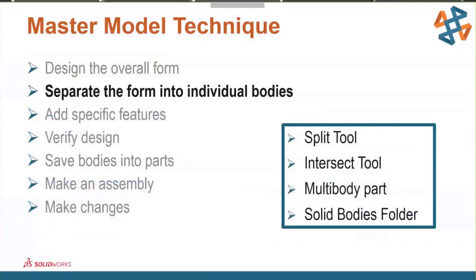Our next step is separating the form into individual bodies. We're going to use the Split tool and the Intersect tool. The Split and Intersect tools are great ways to add bodies without having to add or remove material, and this will result in a multi-body part with each body listed in the solid bodies folder.